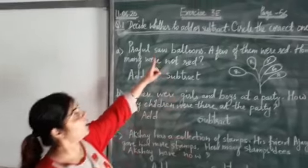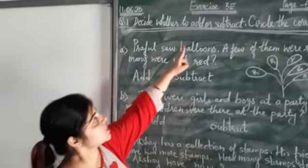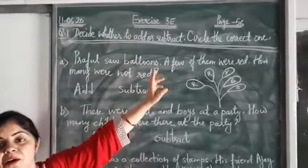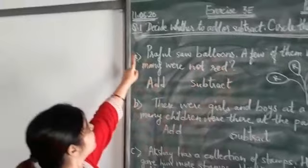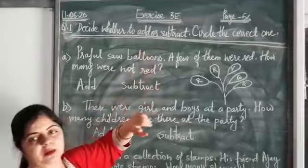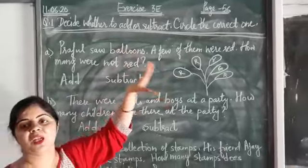Hello children, today we are going to solve exercise 3D, page number 56. Decide whether to add or subtract. Circle the correct one.